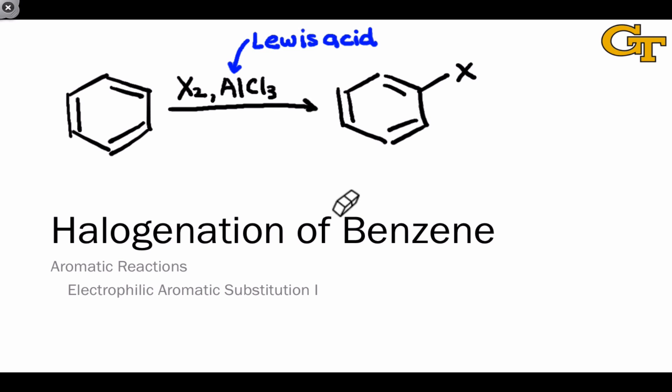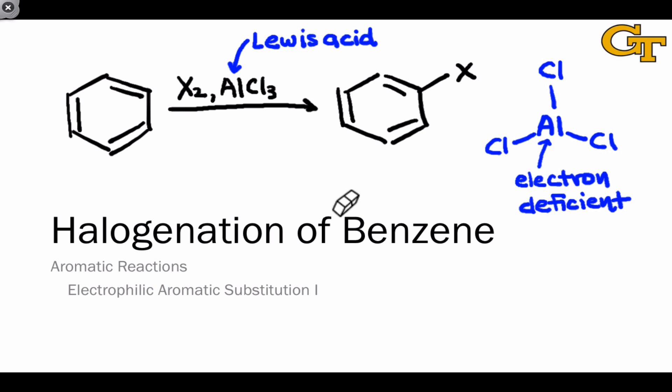We can see that AlCl3 is Lewis acidic by looking at its Lewis structure and recognizing that the central aluminum atom only has six total electrons. Aluminum is in group 13, and so like all group 13 elements such as boron, when the atom is neutral in a Lewis structure, it's going to be electron deficient — the aluminum atom lacks a full octet of electrons. The Lewis acidity of AlCl3 is critical because it helps create the strong electrophile that ultimately reacts with benzene. It engages with X2 to create an electrophile reactive enough to react with benzene, a relatively weak nucleophile.